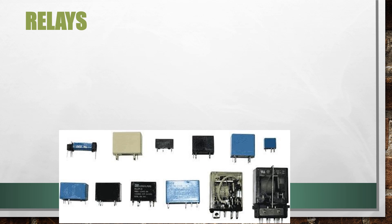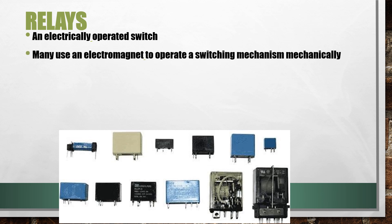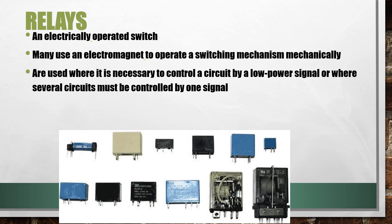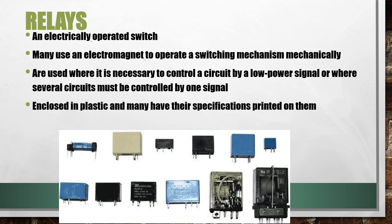What are relays? A relay is an electrically operated switch. Many relays use an electromagnet to operate a switching mechanism mechanically, but other operating principles are also used. Relays are used where it is necessary to control a circuit by a low-power signal, or where several circuits must be controlled by one signal. Relays are typically enclosed in plastic and many have their specifications printed on them. They are typically marked with a K on a circuit board.